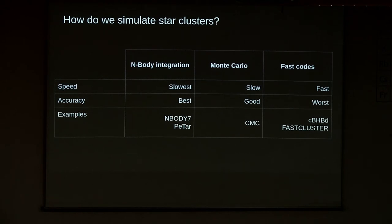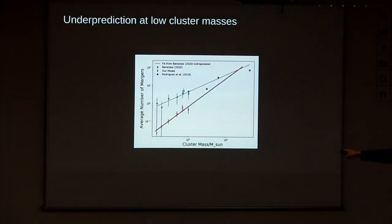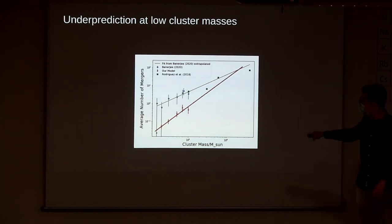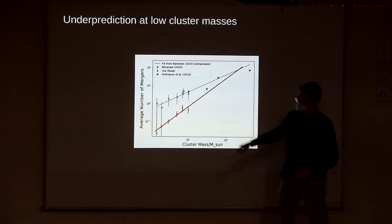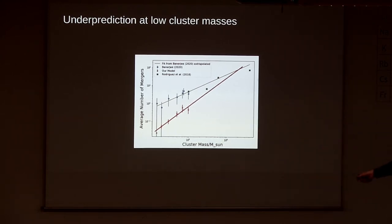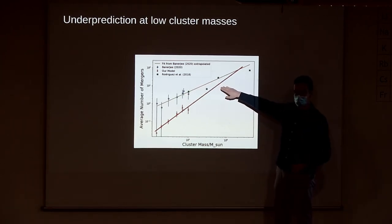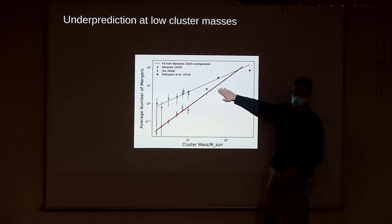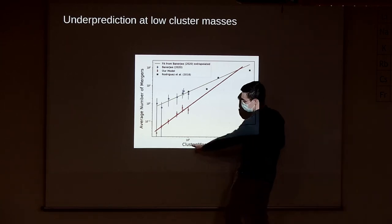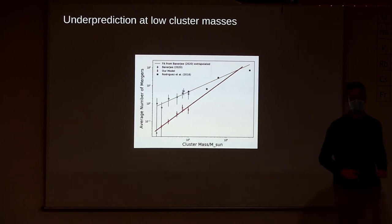I'm giving here some names of codes developed by my colleagues, like CBBHD and Fast Cluster. If we run those fast models, for example CBBHD, we see there is a slight under-prediction of mergers at low cluster masses. The prediction is good for high cluster masses, but there's an under-prediction for low cluster masses. These are n-body simulations, the most accurate simulations we have, versus approximative simulations. At low cluster masses, there's this discrepancy.